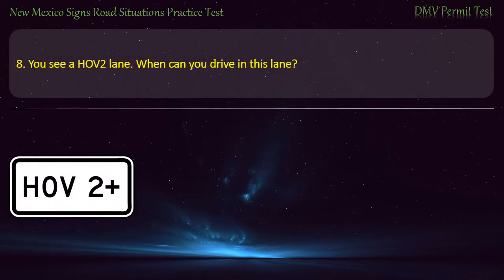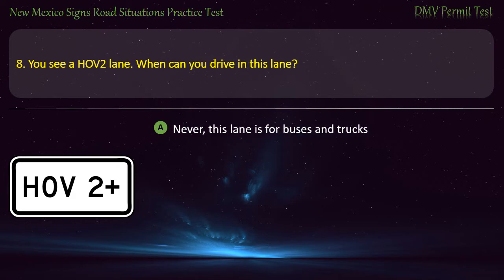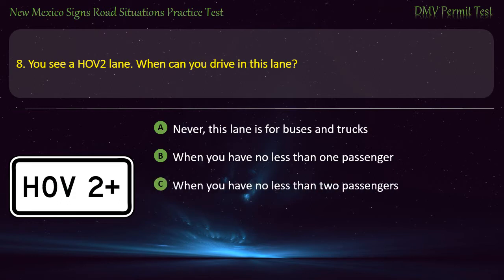Question 8. You see a HOV 2-lane. When can you drive in this lane? Options: Never, this lane is for buses and trucks; when you have no less than one passenger; when you have no less than two passengers; or at any time. Answer: When you have no less than one passenger.